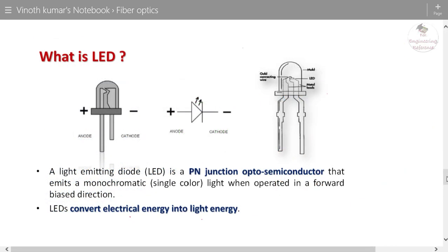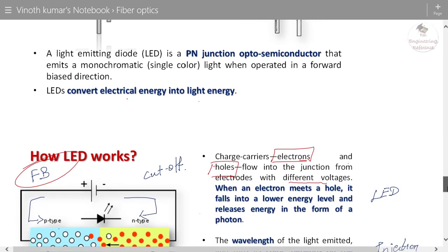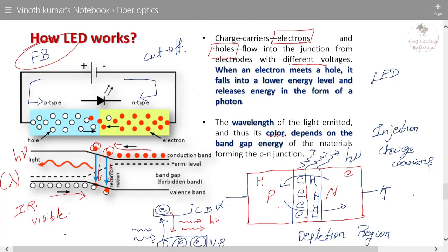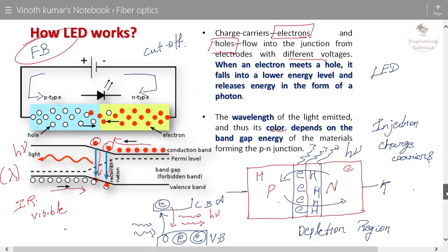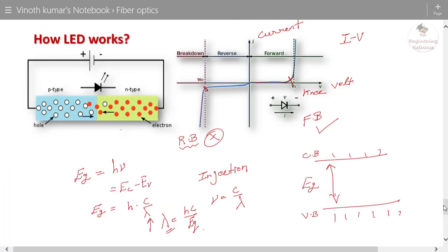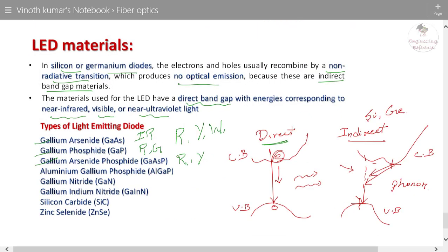To recap: a light emitting diode converts electrical energy into light energy and works similarly to a pn junction diode. The major difference is the type of material used — direct band gap semiconductors instead of silicon or germanium. It is operated in forward biased condition; when forward biased, movement of charge carriers toward the junction leads to recombination and emission of light. The wavelength of light emitted is inversely proportional to the energy gap, and different direct band gap materials produce different colors of light. Thank you.